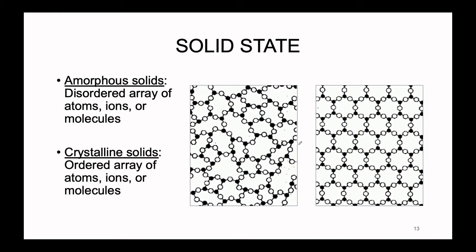First, there is what is known as the amorphous solid. This is a solid that is formed by a disordered array of atoms, ions, or molecules, as we can see pictured here. What we have illustrated in this amorphous solid — specifically what this is an illustration of — is that of glass, also known as silicon dioxide.